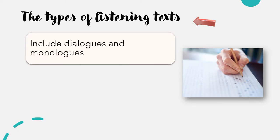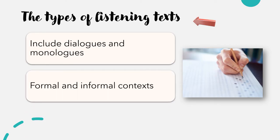Types of listening texts in the test include both dialogues and monologues. The dialogues will involve two people talking about a topic. These dialogues could be a discussion between a DJ and a personality on radio, or even simply two friends talking. Monologues are listening texts when only one person is talking, such as a counsellor giving advice or a book writer talking about a new book. The listening texts would be both in the formal and informal context.